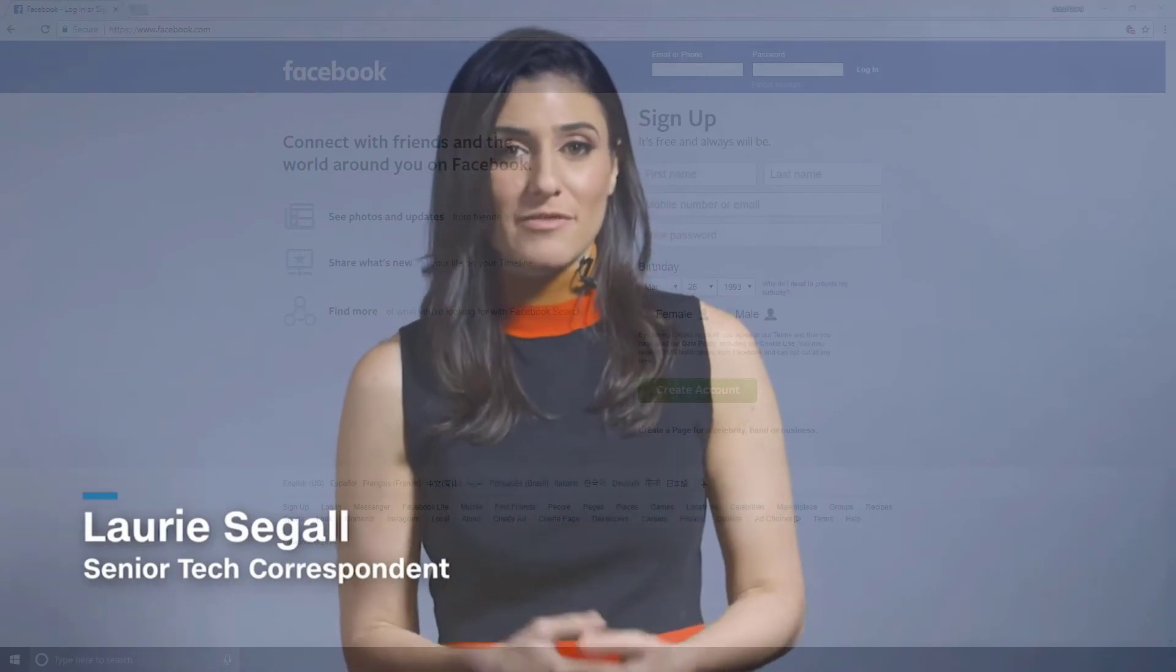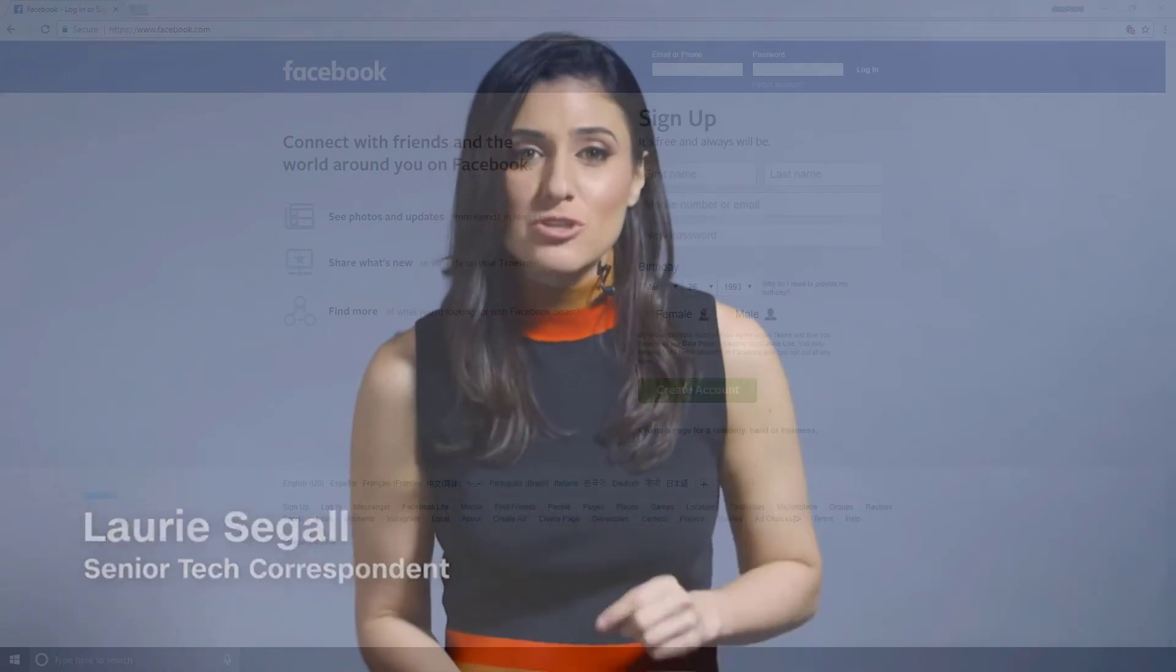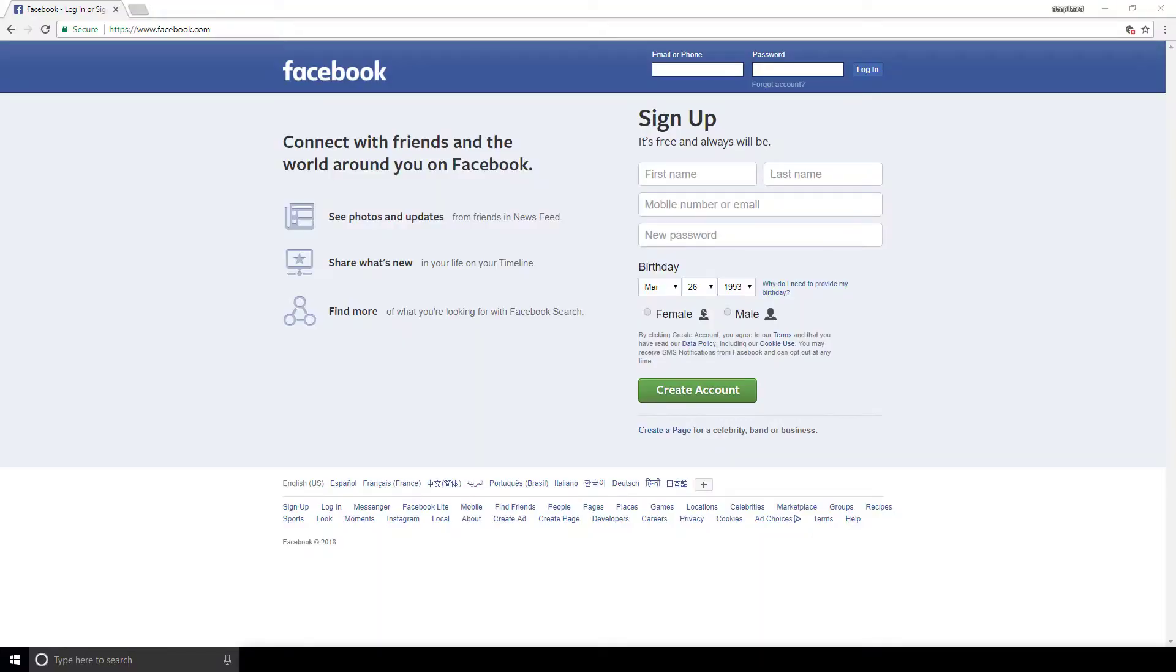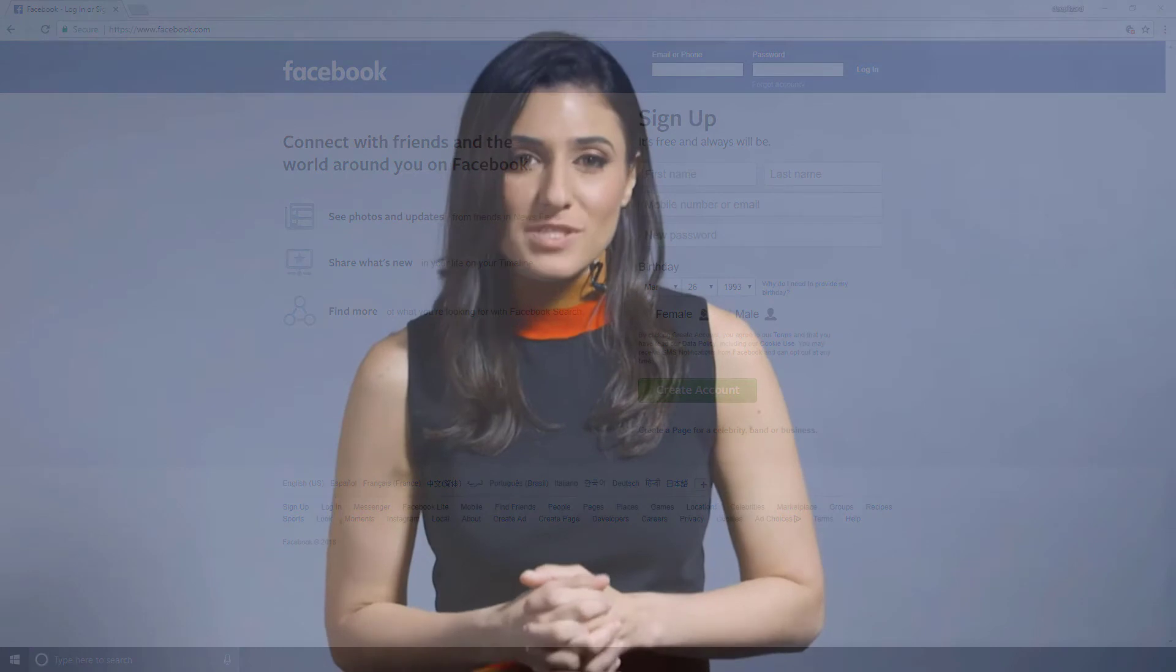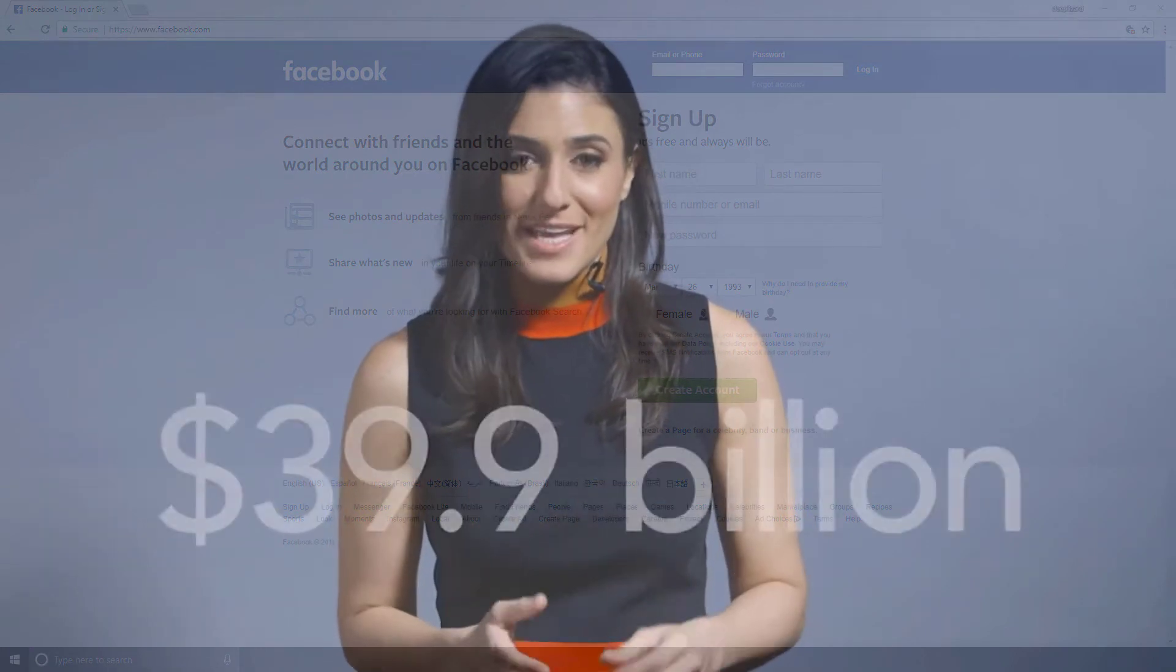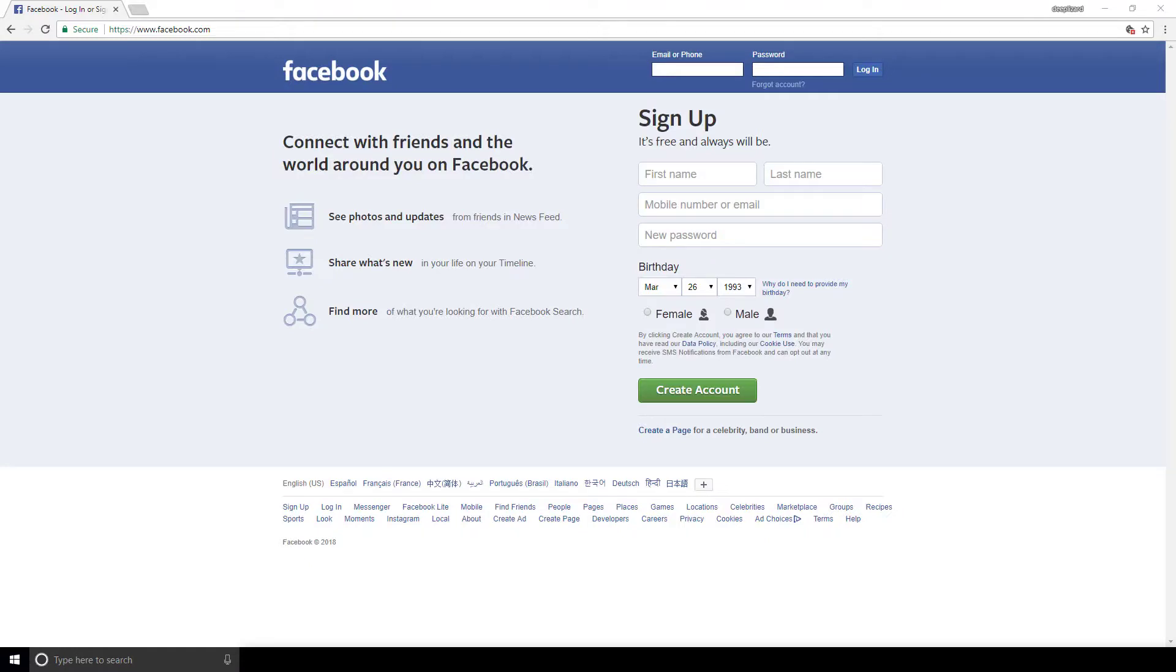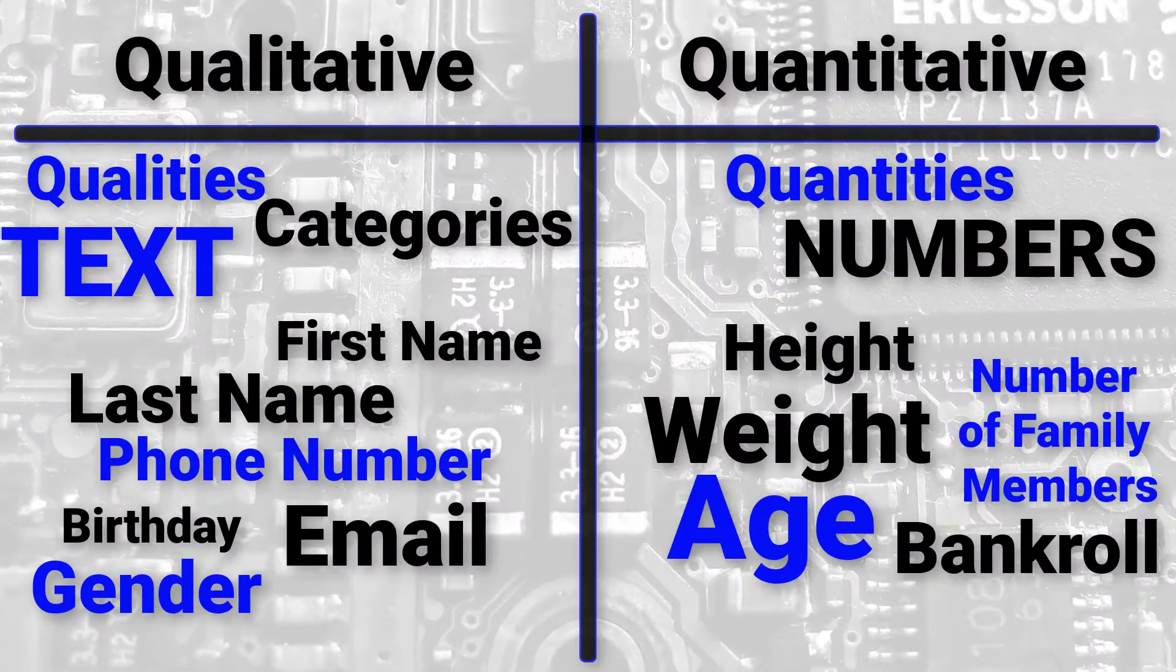Every post you like, every page you follow, every friend you make tells Facebook a bit more about who you are. All of this data is used to better represent each human inside computer programs. In Facebook's case, the better represented we are, the more money they can make serving ads to us. Last year Facebook made 98% of its revenue on advertising. That's 39.9 billion dollars. And all of this valuable data comes down to some numbers and some text, ABCs and 123s. That's it.